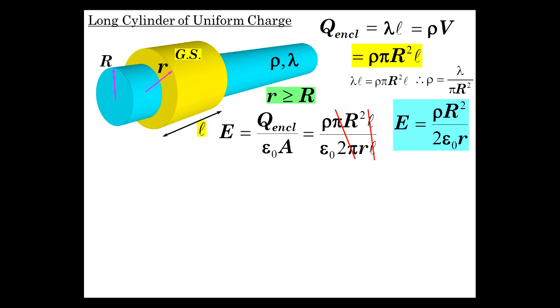This gives us rho R squared over 2 epsilon 0 r. Well, we can also express this in terms of lambda. Recognizing, just replacing this rho with lambda and then divide by pi R squared. So the R squared is going to go away. We'll end up with a pi underneath here. There it is, folks. Two different ways of expressing the same electric field, in terms of volume charge density, linear charge density.